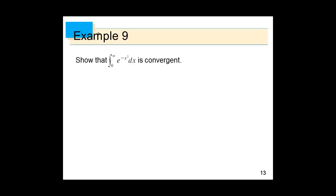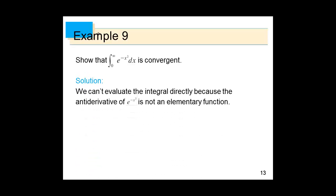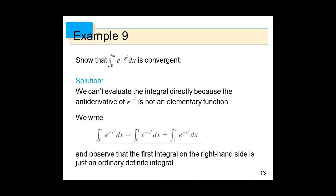We break up the integral: the integral from 0 to ∞ of e^(-x²) dx equals the integral from 0 to 1 plus the integral from 1 to ∞ of e^(-x²) dx. The first part — integral of a continuous function over [0,1] — clearly exists. The question is whether the integral from 1 to ∞ of e^(-x²) dx converges.